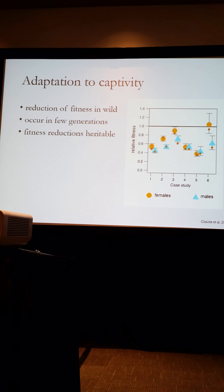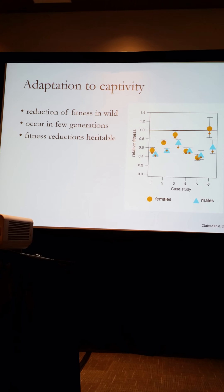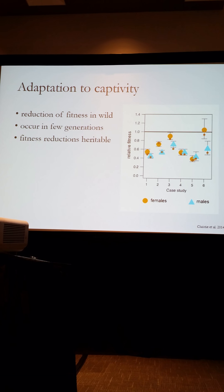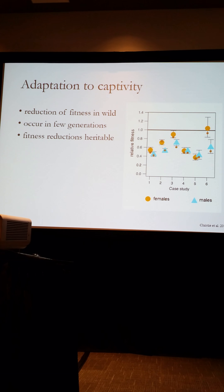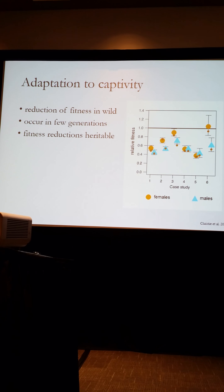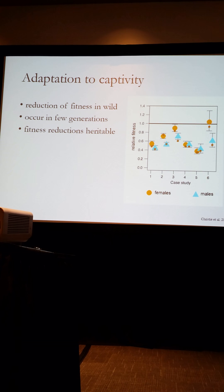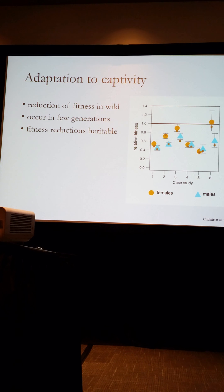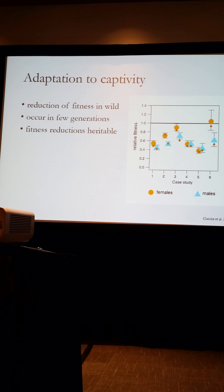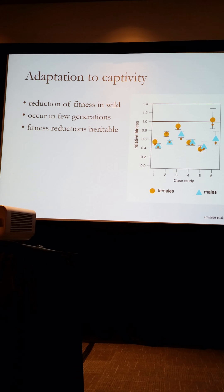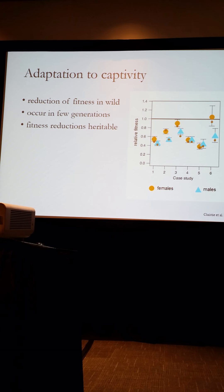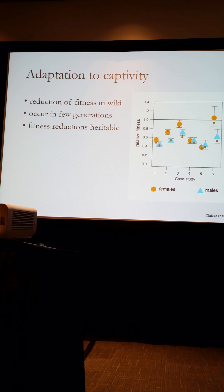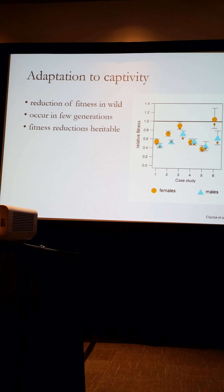The trouble with this is that we know that adaptation to captivity causes a reduction of fitness in captive-born individuals once they're in the wild. This plot here is showing the fitness of captive-born individuals relative to wild-born individuals, all measured in the wild, across six case studies. For the vast majority of cases, the fitness is less than one, and the mean comes out to about 0.5 — so captive-born individuals have about half the fitness of wild-born individuals.